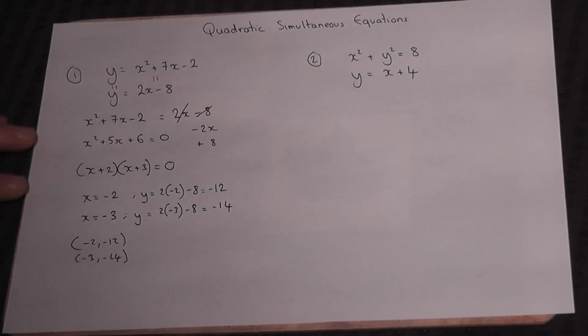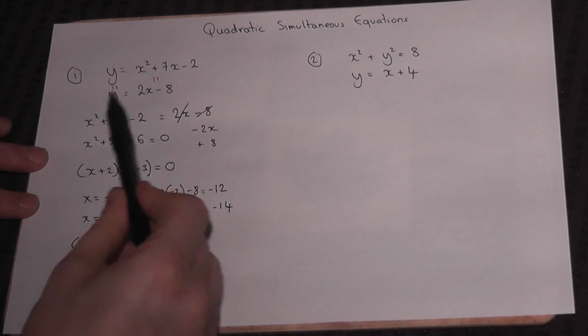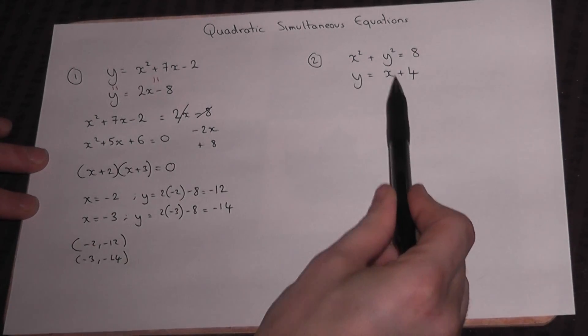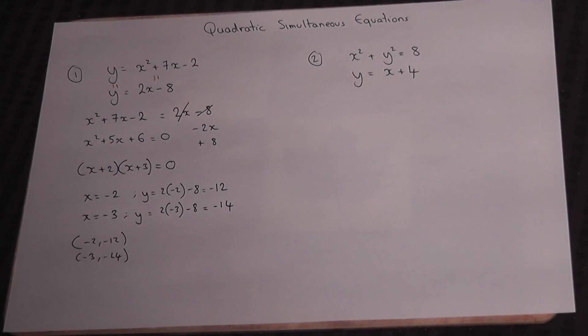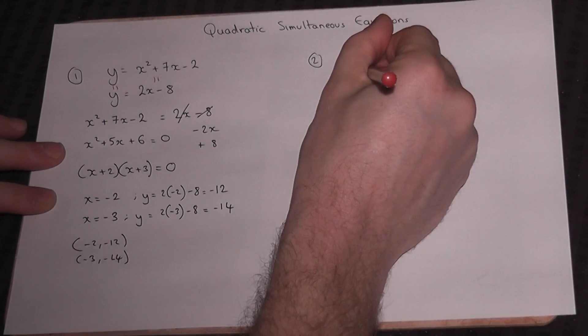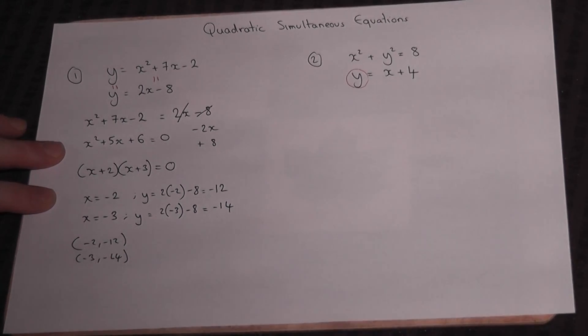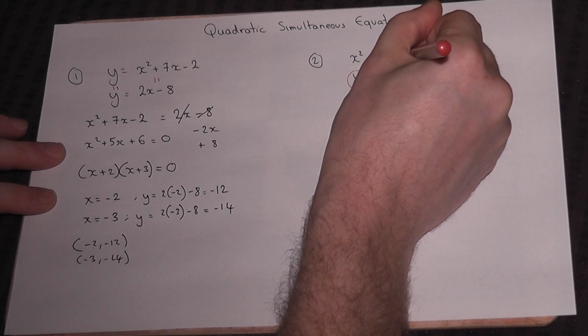In the second example it's similar, but whereas these are both y equals, this one's y equals but this one here is not. However, there's a little trick we do. This Y here, where they intersect, where they're the same, must equal this Y here.